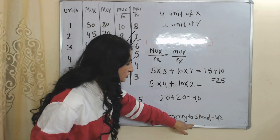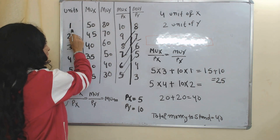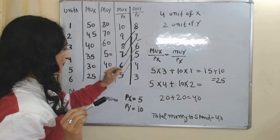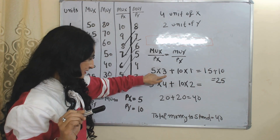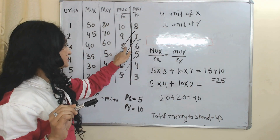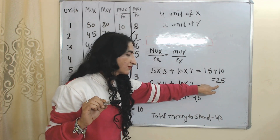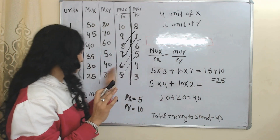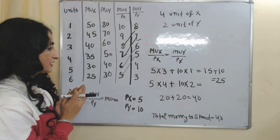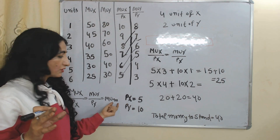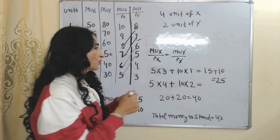We assume the consumer has a total of 40 rupees to spend. In the first case, when MUX/PX and MUY/PY are both equal to 8, the consumer is buying 3 units of X and 1 unit of Y. Price of one unit of X is 5 and price of one unit of Y is 10. So 5 × 3 = 15 and 10 × 1 = 10, giving a total expenditure of 25 rupees. Although MUX/PX equals MUY/PY at this point, the consumer is only spending 25 rupees out of 40, meaning they are not getting maximum satisfaction. This is therefore not the consumer equilibrium point.